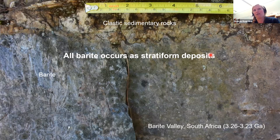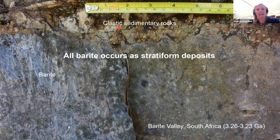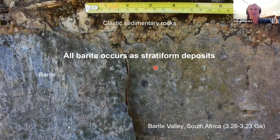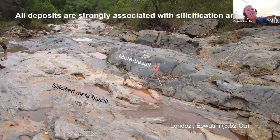All barite deposits occur as stratiform deposits in horizons parallel to sedimentary or volcanic bedding. You can see an erosional contact between clastic sedimentary rocks and the barite at Barite Valley in South Africa, providing evidence for sin-sedimentary barite deposition. At other deposits such as the Sargur and Londozi barites, we find evidence for primary deposition — alteration zones occur only below the barite and not above, arguing against secondary barite formation in veins.